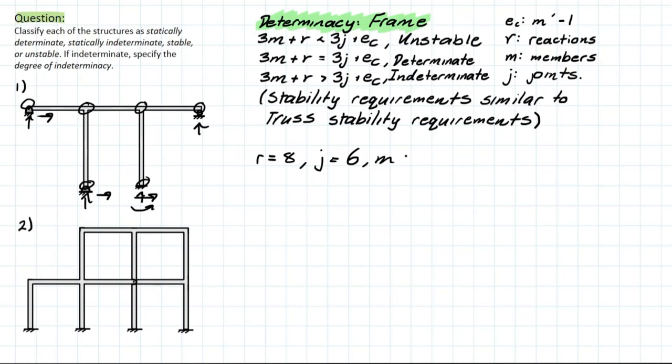Moving on, we have the number of members which is easy. Where these joints are are going to count as disconnects between members. So we have 1, 2, 3, 4, and 5 for a total of 5 for m. And then we have no joints or no hinges in this problem. Therefore, we can use the equation, we have 3m, which is 5, plus r, which is 8. And then we have to figure out if it's going to be equal to the other side. We're going to check 3j, which is 6, plus 0. We'll be left with 18 here on the right side. And then we have 8 plus 15, which is 23 on the other.